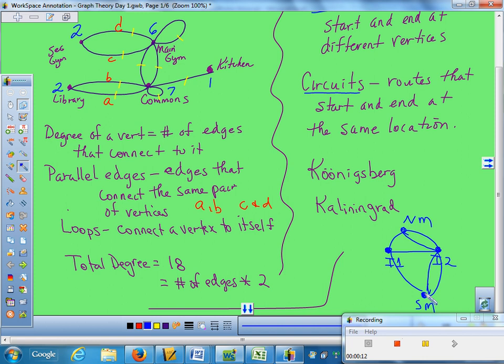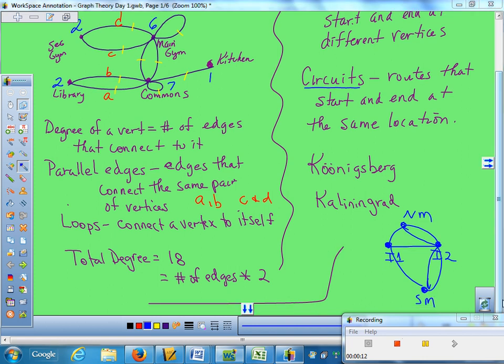He wanted to know if it was possible to find a route. And so you could once again sit here and try to trace this many times over. And you'll discover no matter how hard you try and wherever you start, this particular one doesn't work. He could not find a route that would cross all the bridges one time. Edges are bridges.